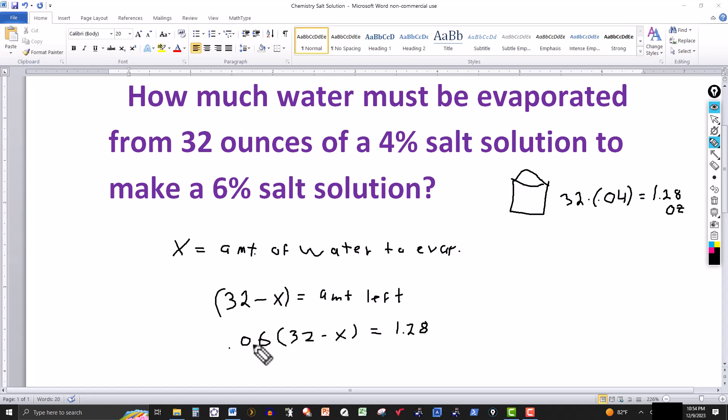So let's just multiply through 0.06 times 32, which is 1.92, minus 0.06 times the x. Just multiplying here, distribution here. This should equal 1.28.